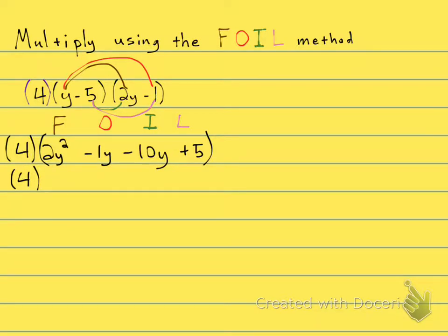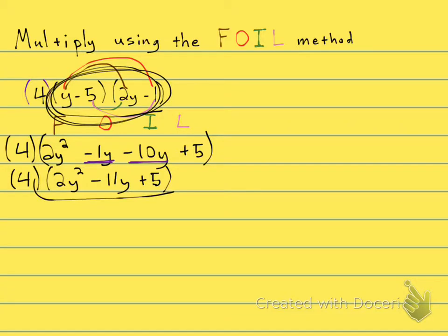So I'm going to go ahead and combine minus 1y minus 10y, and that is going to give me minus 11y. 2y squared minus 11y plus 5. So I have successfully FOILed these two binomials to get this trinomial right here.